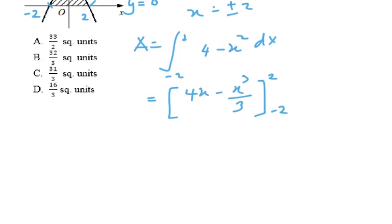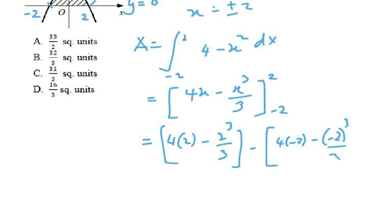Moving on, you substitute the values in, where you put in 4 multiply by 2, minus 2 to the power of 3 over 3, that's the first part, minus 4 times negative 2, minus negative 2 to the power of 3 over 3.